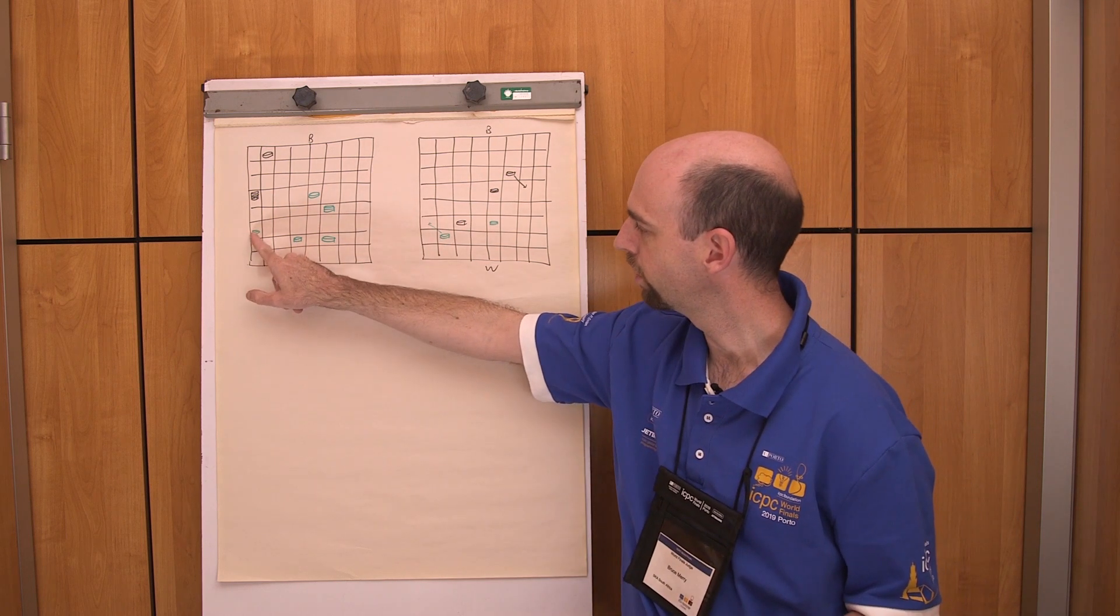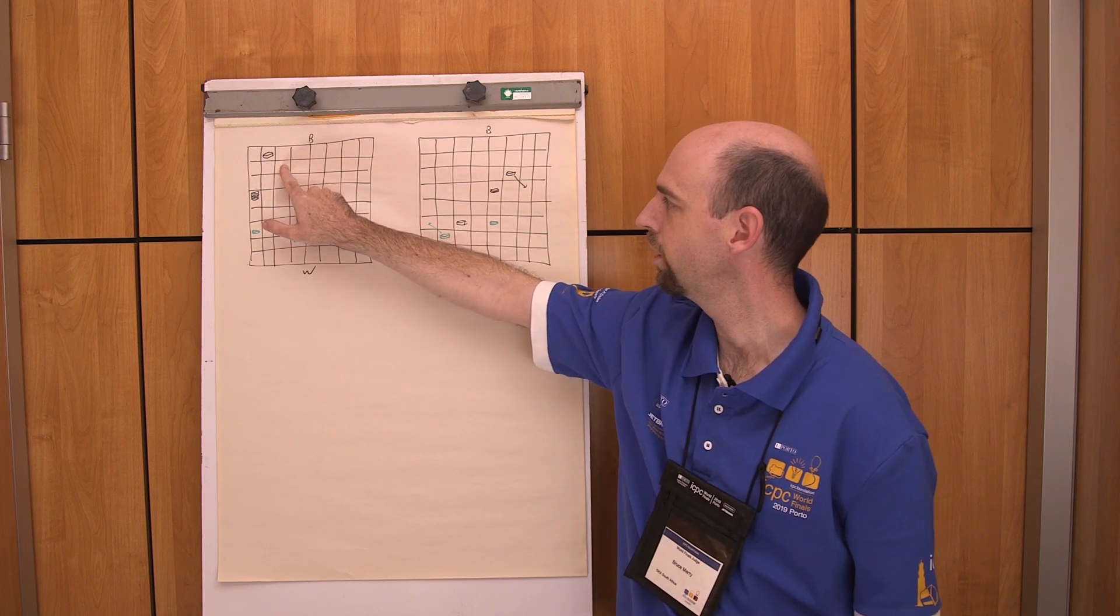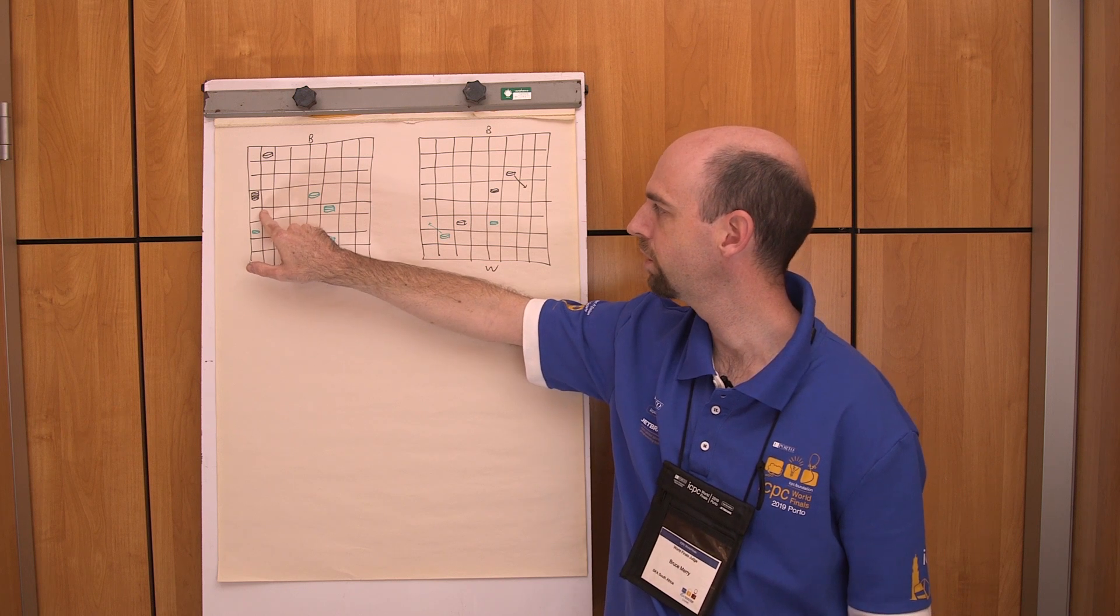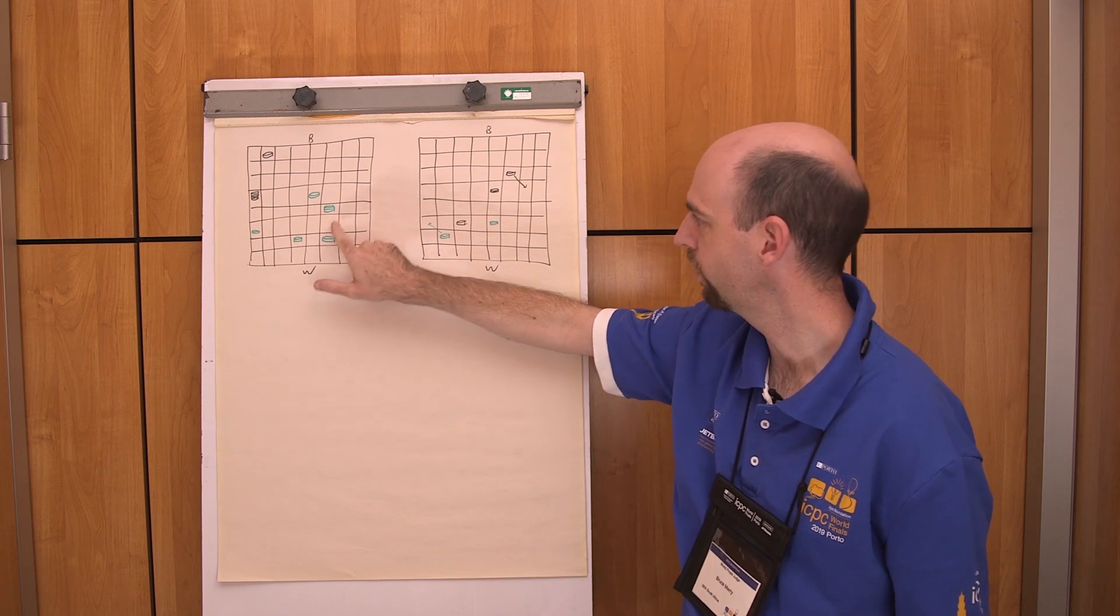So for example, if white had moved that piece in there, then black is not allowed to move this piece there in its turn because it has a jump option available, which is this one. So it has to jump, and then once it gets here, it has to carry on jumping to there and to there.